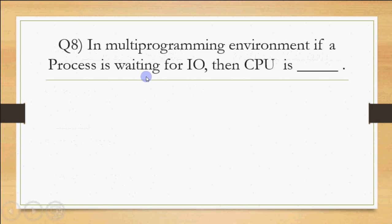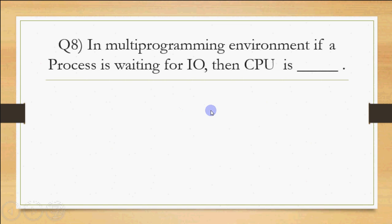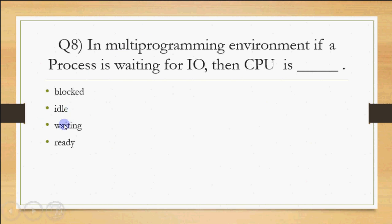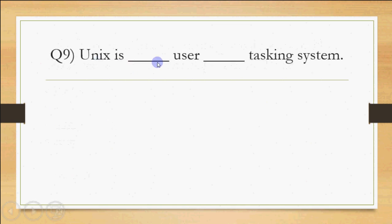Next OS question: in a multiprogramming environment, if a process is waiting for I/O, what is the CPU doing? As discussed in the OS video, in multiprogramming the processor executes one job, and when that job goes for I/O the CPU is free to pick up another job. So out of the options — blocked, idle, waiting, or ready — the CPU is idle at that time.